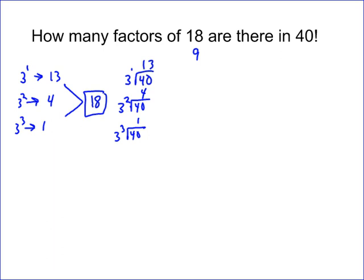However, since we need pairs of 3's (because 18 requires 3 squared), we take the 18 total threes and divide by 2, giving 9 pairs. So there are 9 factors of 18 in 40 factorial.